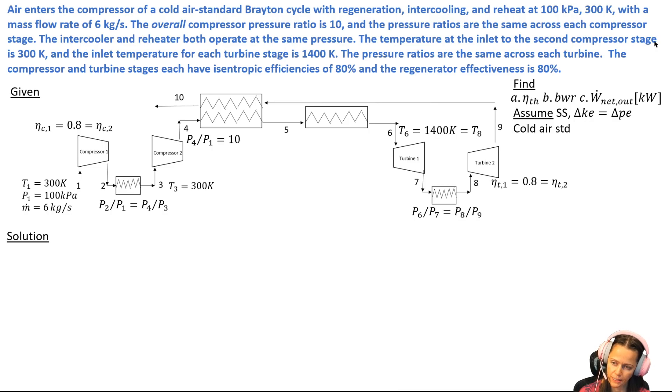So P6 over P7 equals P8 over P9, and then of course I can put my isentropic efficiencies on there. I've got some inlet conditions for the turbine there, so I need to find thermal efficiency, back work ratio, and the power net output.